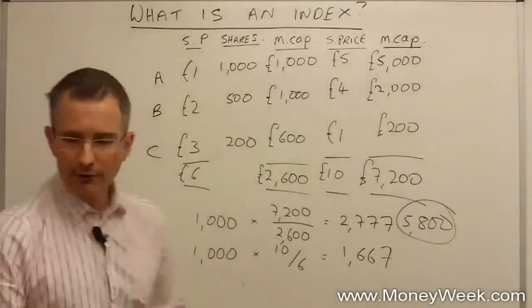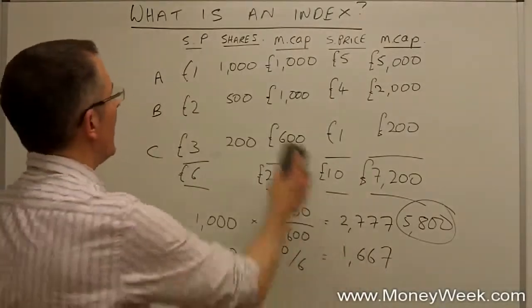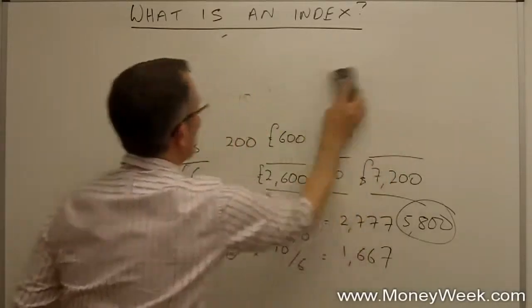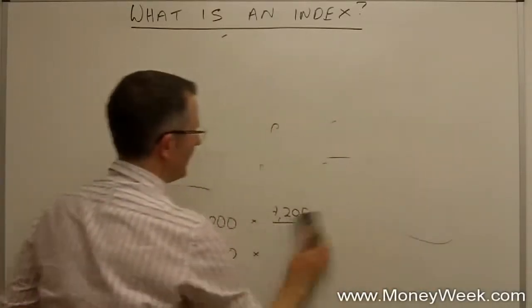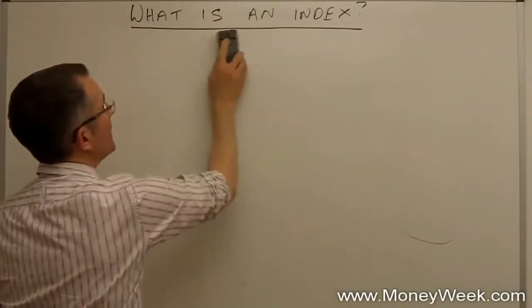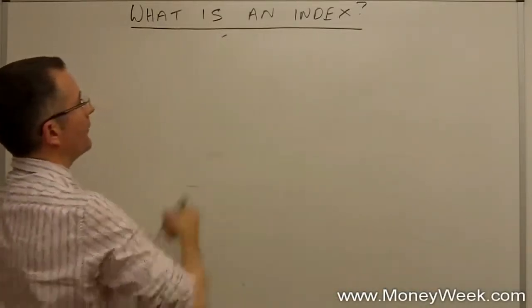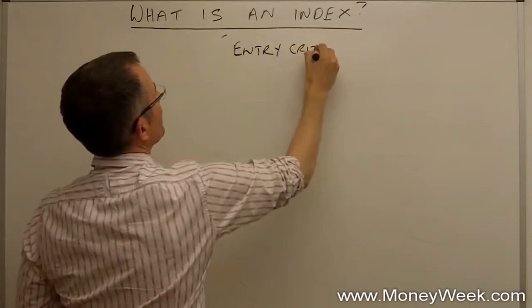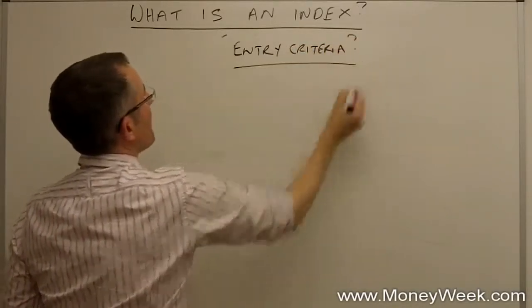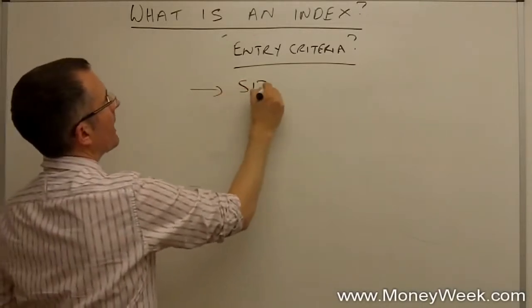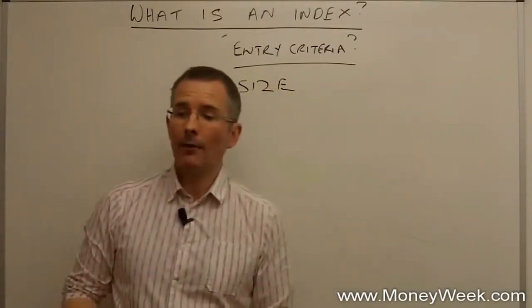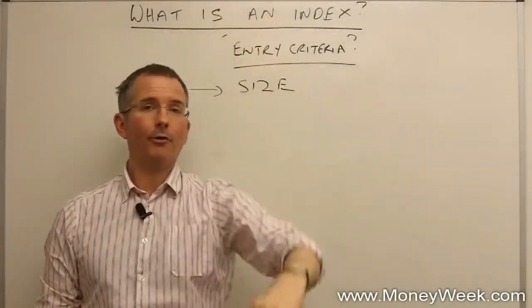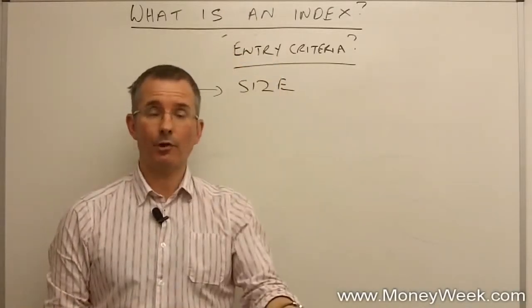That's the next question. If we look at the FTSE 100, for example, that is a club of 100 members chosen on the basis largely of size. So, what are the entry criteria? This is worth bearing in mind. Largely, in a market capitalisation driven index, it will be size. So, in other words, if you ranked every single share in the UK market, and there's a lot more than 100 of them, top to bottom by market capitalisation, you'd in theory slice off once you've got to 100.